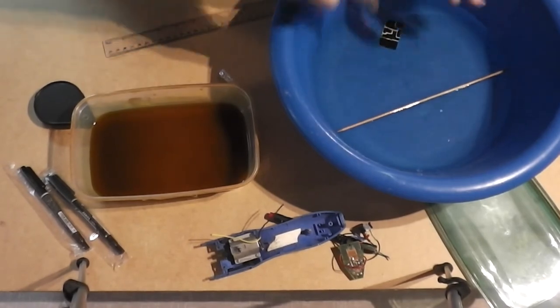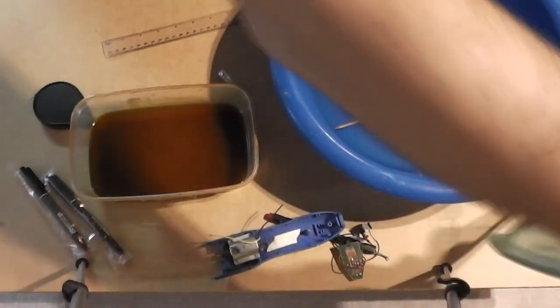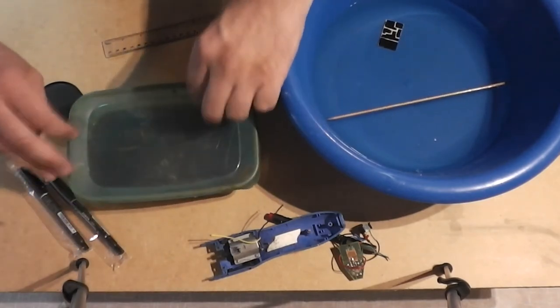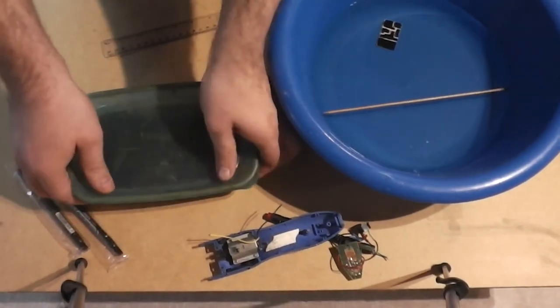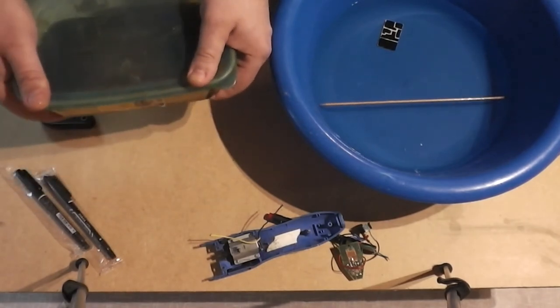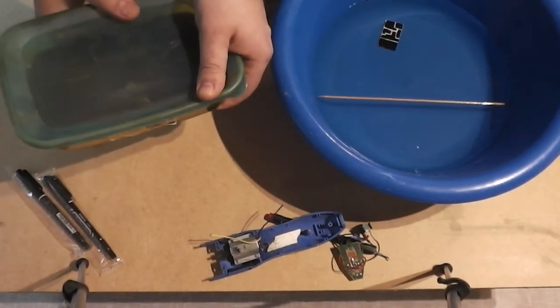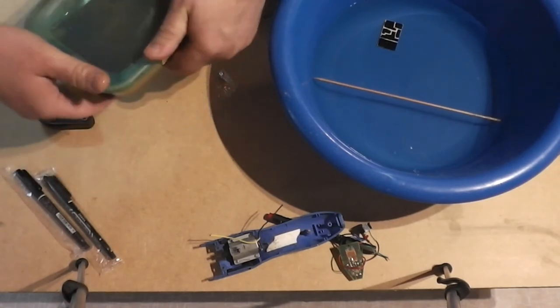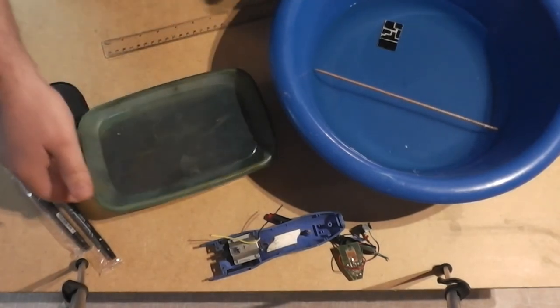take the board after etching from the solution and wash it under a water pipe or whatever. There are always some metal parts, and believe me, it will damage them easily.